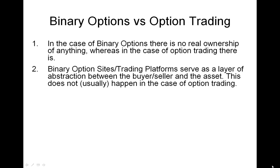Whenever we go through binary option websites and put trades on an asset like gold, we're never really buying or selling gold. What we're doing is dealing specifically with the binary option trading website. If we incur losses, our money goes to the website, and if we make money, we make it off the website — we really have nothing to do with the actual asset. Whereas in the case of option trading, we actually have rights with respect to the asset.